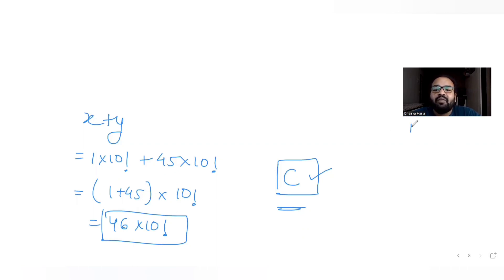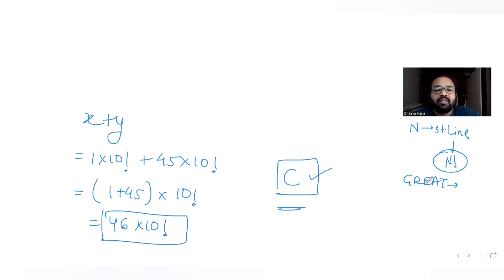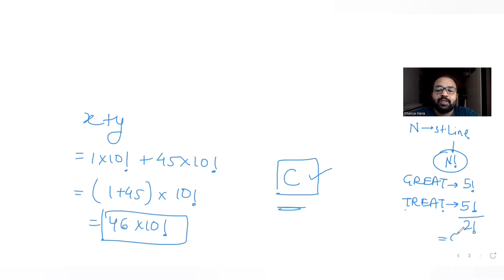The key ideas used: n different things can be arranged in a straight line in n! ways. For GREAT, all 5 letters are distinct, so 5! = 120 words. For TREAT, one letter 't' repeats twice, so we get 5!/2! = 60 words. In general, divide by the factorial of the number of times each repeated letter appears to get the count of unique words.